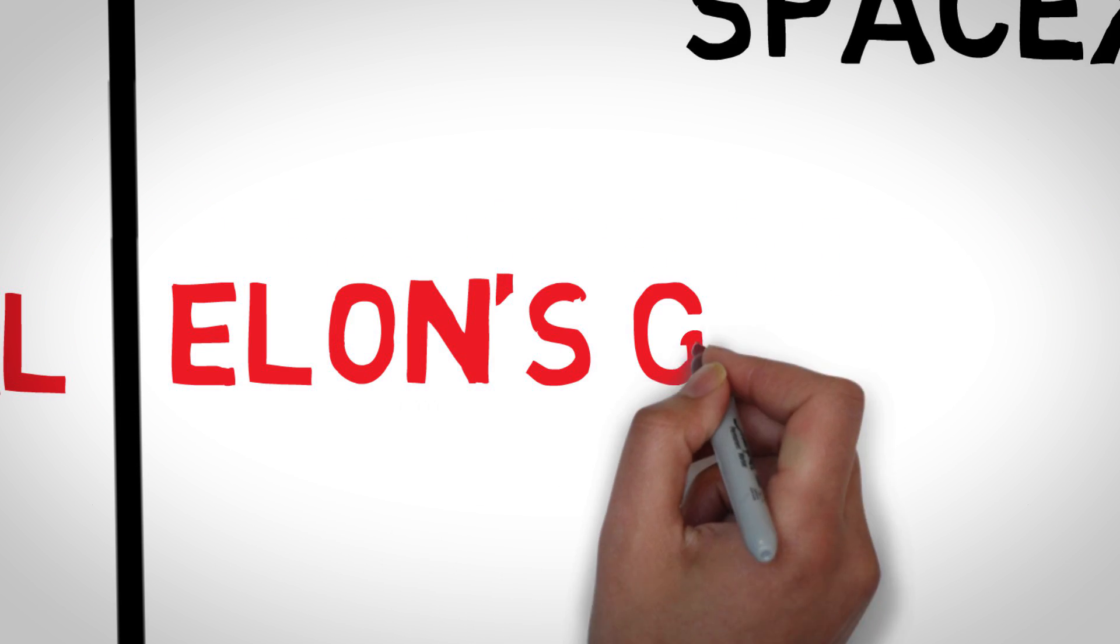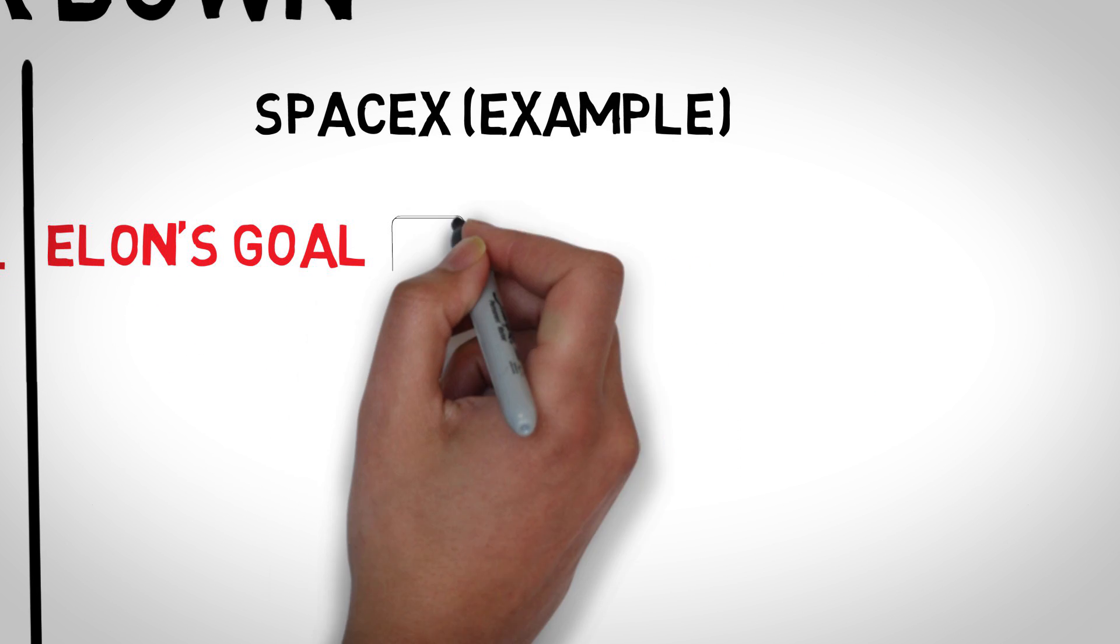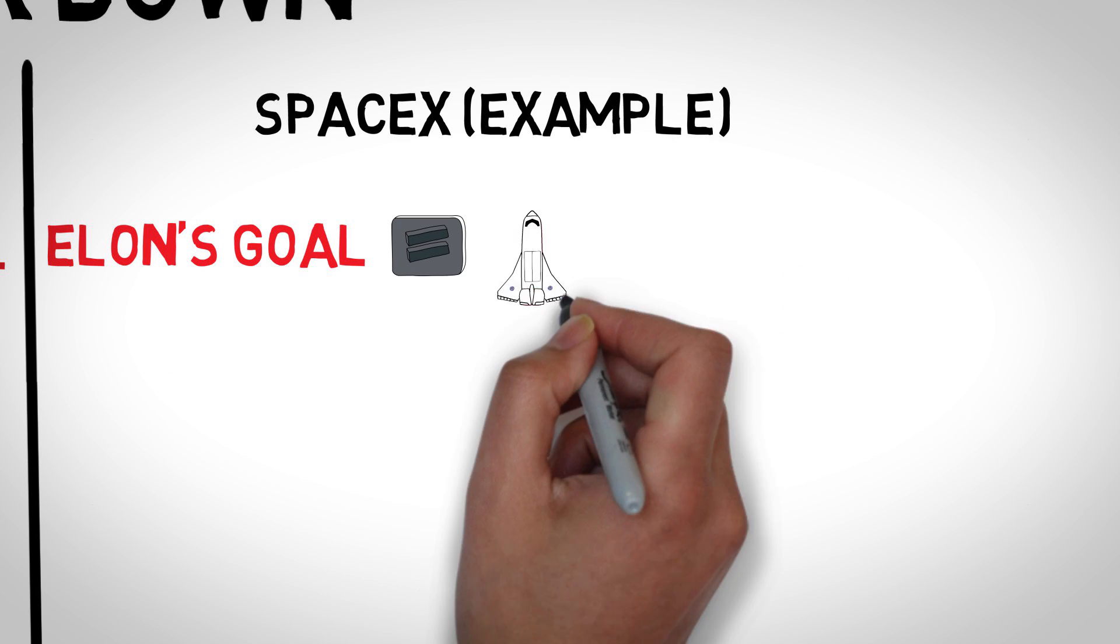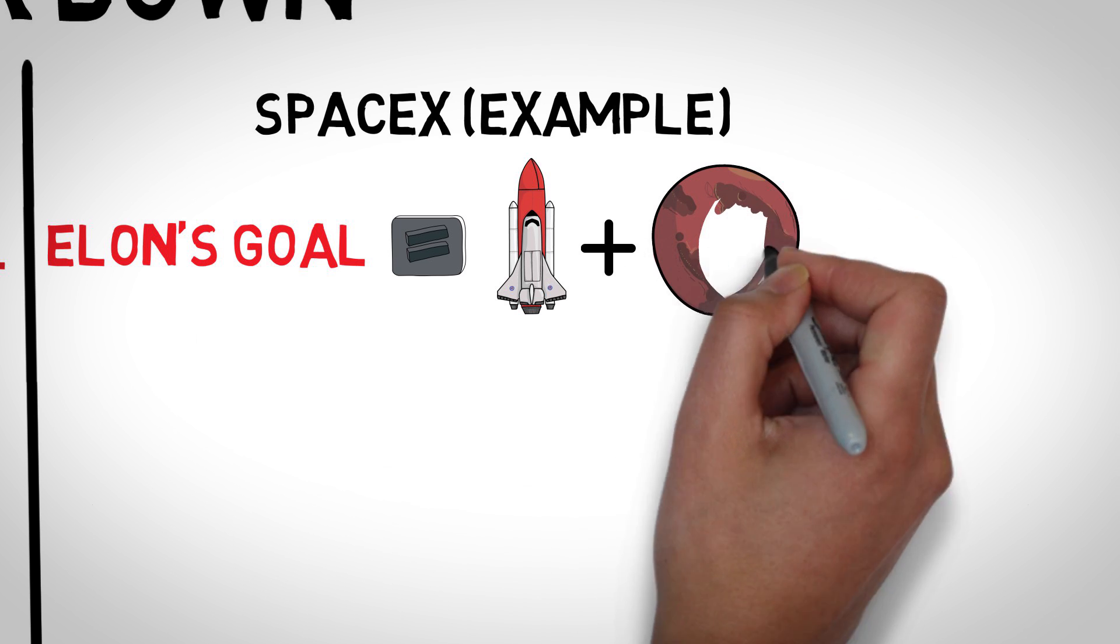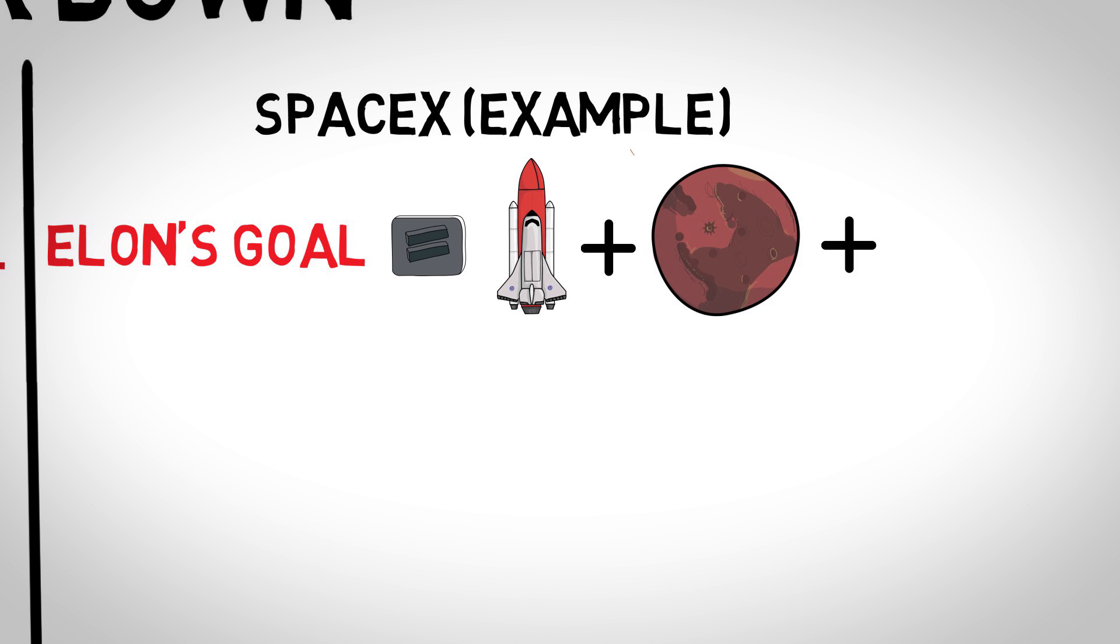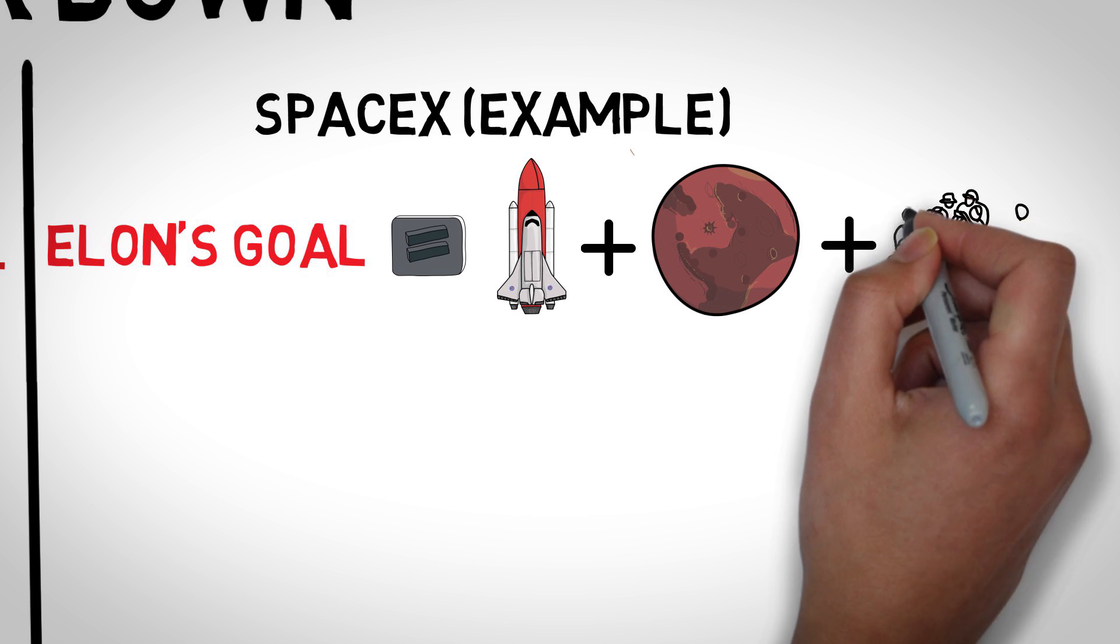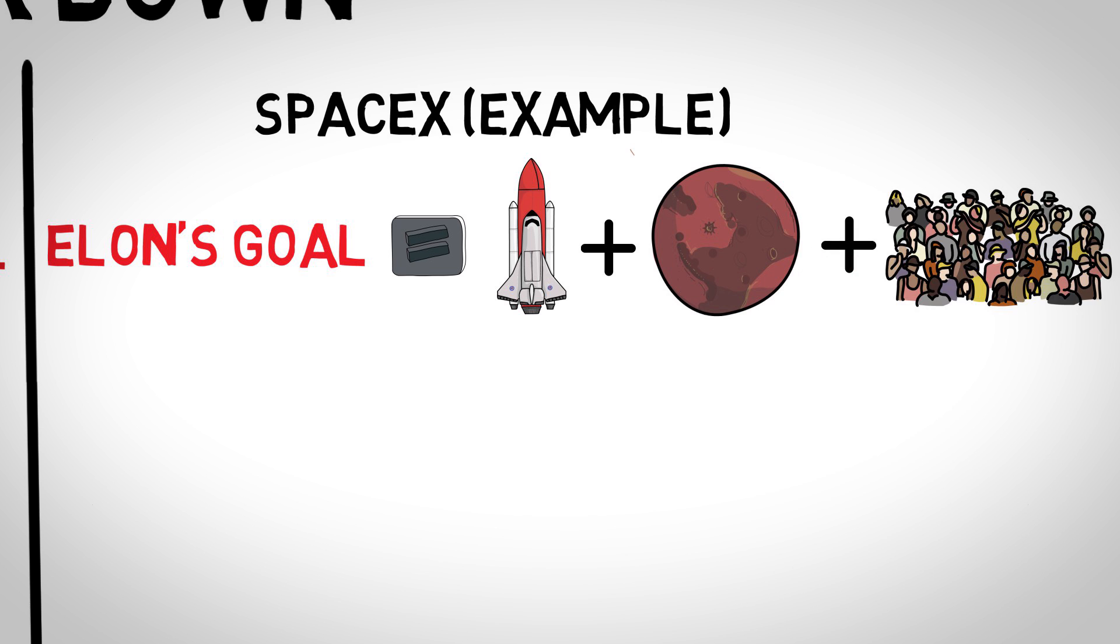Elon's ultimate vision for SpaceX is to colonize Mars. On the SpaceX website, the mission statement is to revolutionize space technology with the ultimate goal of enabling people to live on other planets. This is a very clear mission that is easy to visualize and understand.